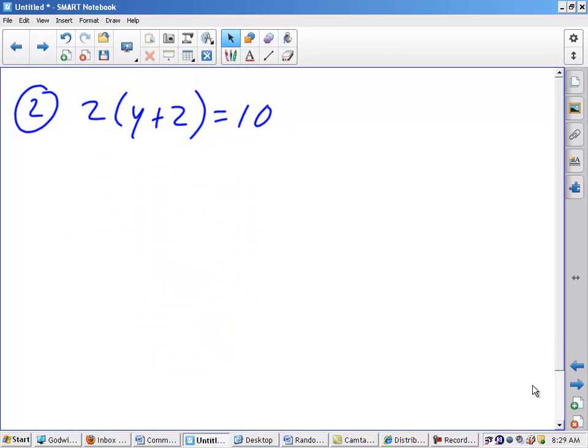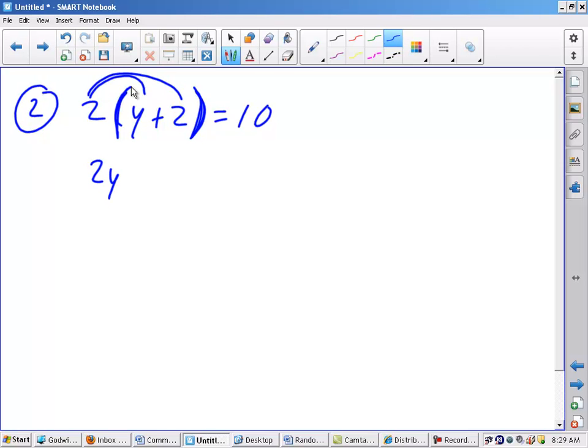Okay, example two. Go through your steps. Clear the equation of fractions and decimals. I don't see any. Second, distribute if necessary, and it is necessary because I see parentheses and a number out front. Remember that you need to distribute the 2 to the y and the 2 to the 2. So 2 times y will give you 2y, and 2 times 2 will give you 4, and then equals 10.